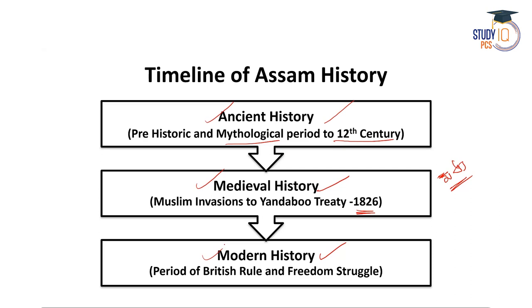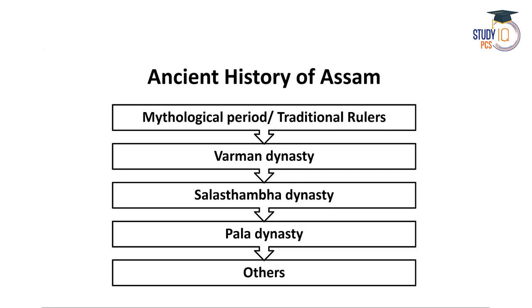These three sections — ancient history, medieval history, and modern history — I will cover in this particular course. Ancient history of Assam begins with the mythological period or traditional rulers. This period is based entirely on mythology, so no real evidence like stone inscriptions or written literature are found regarding this particular period.